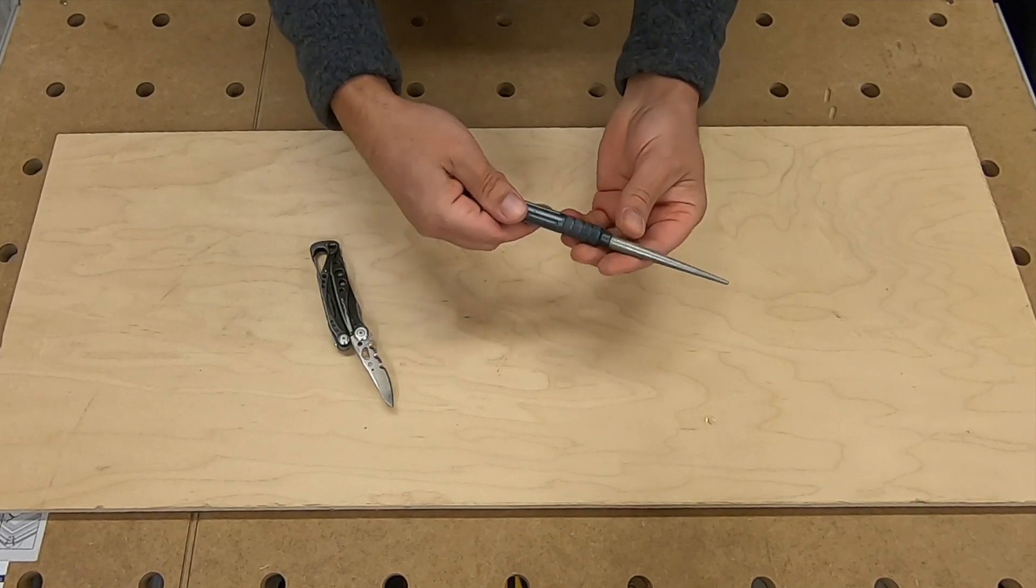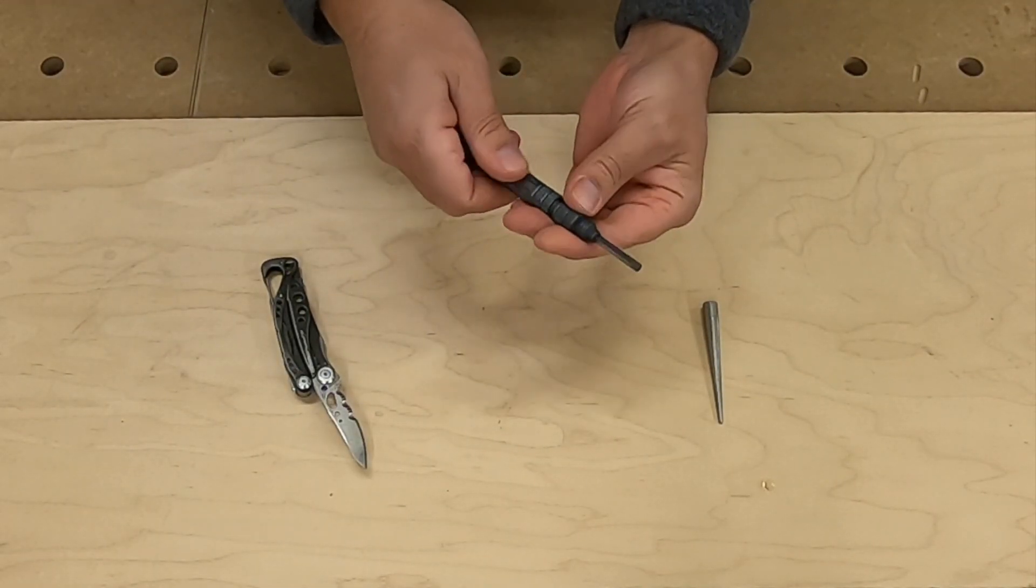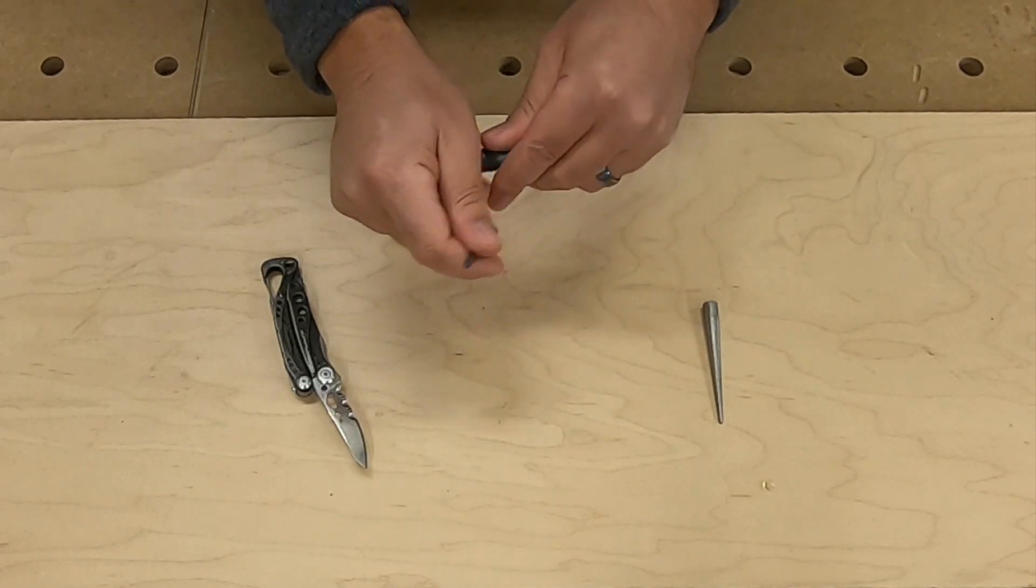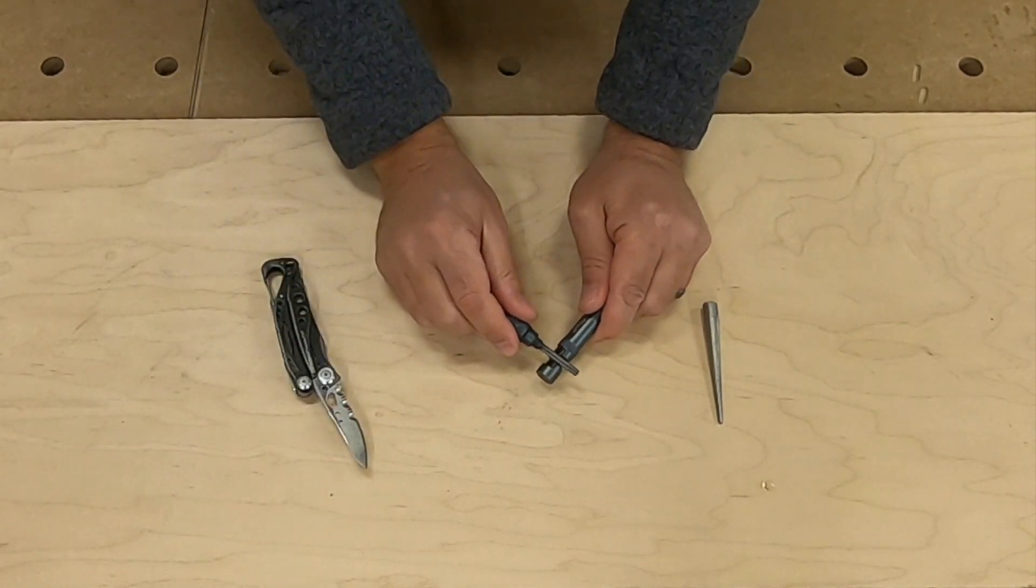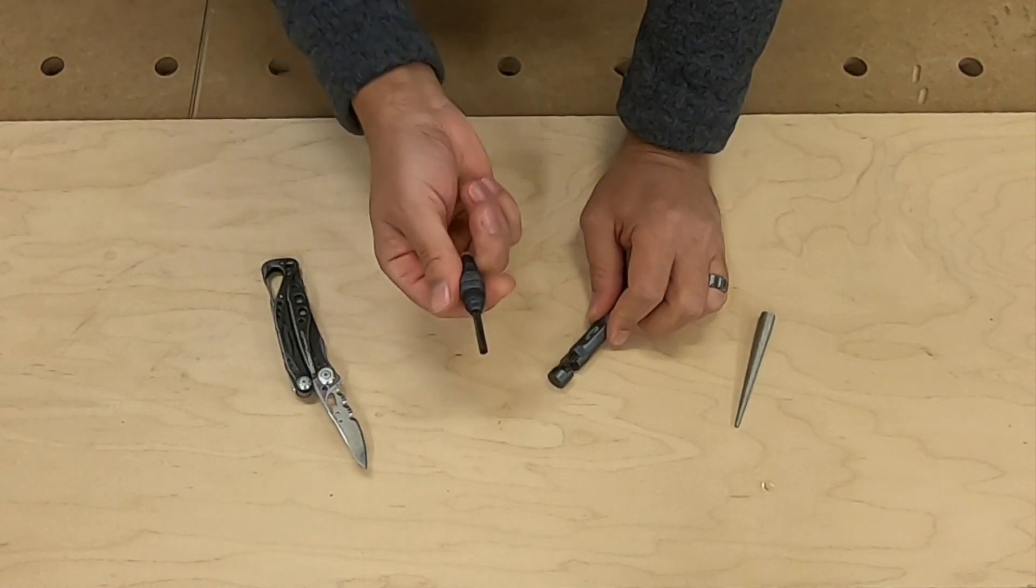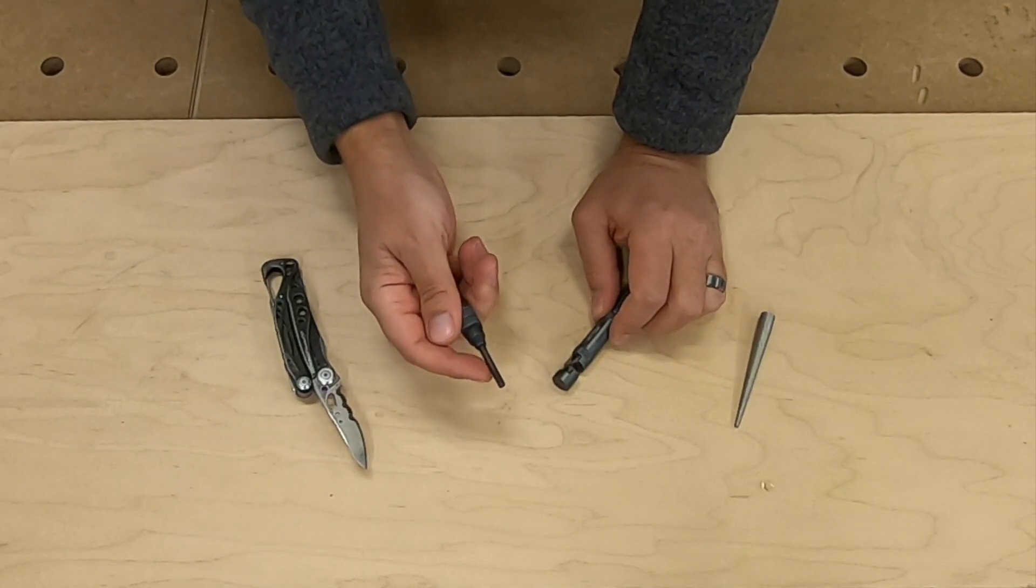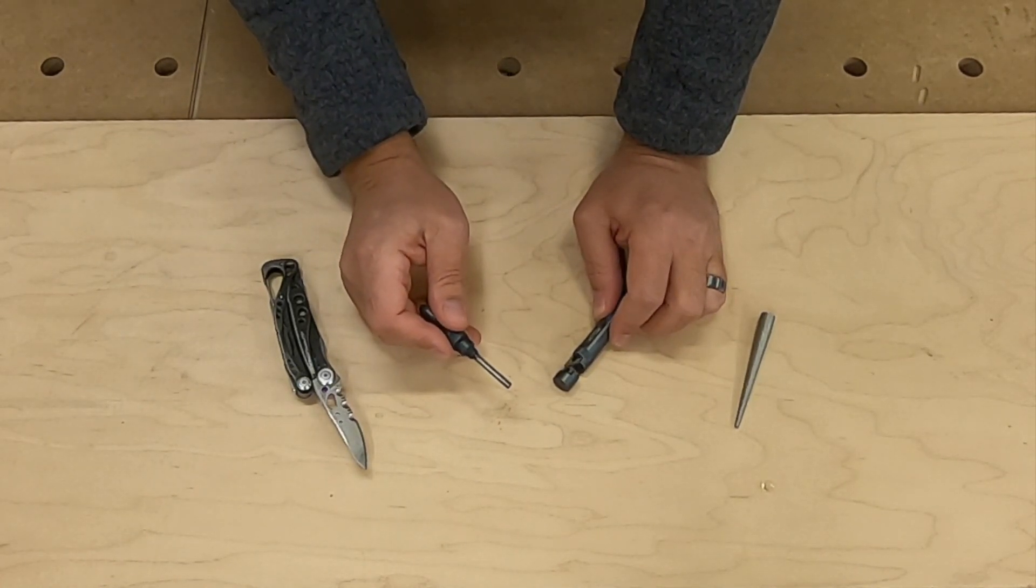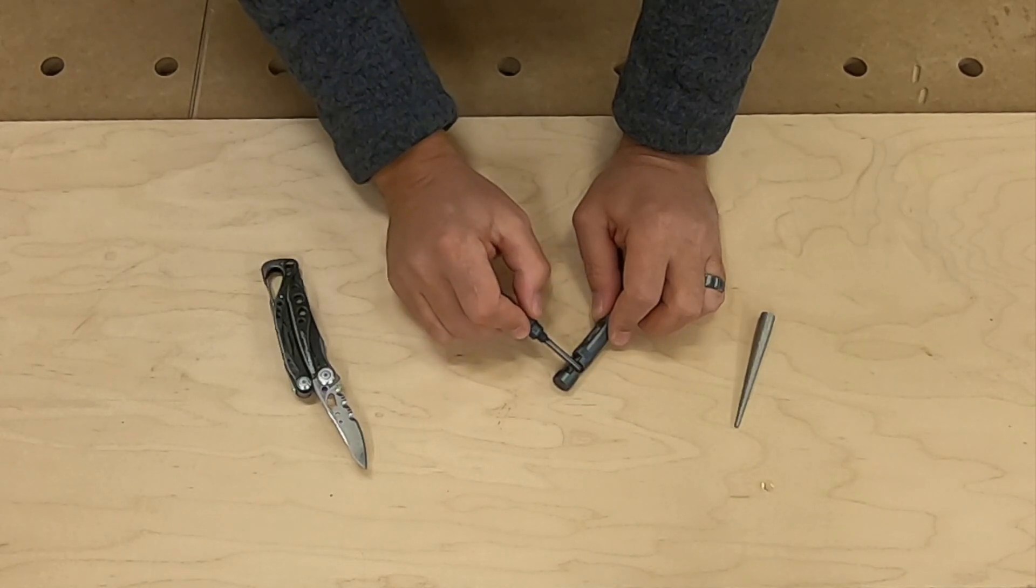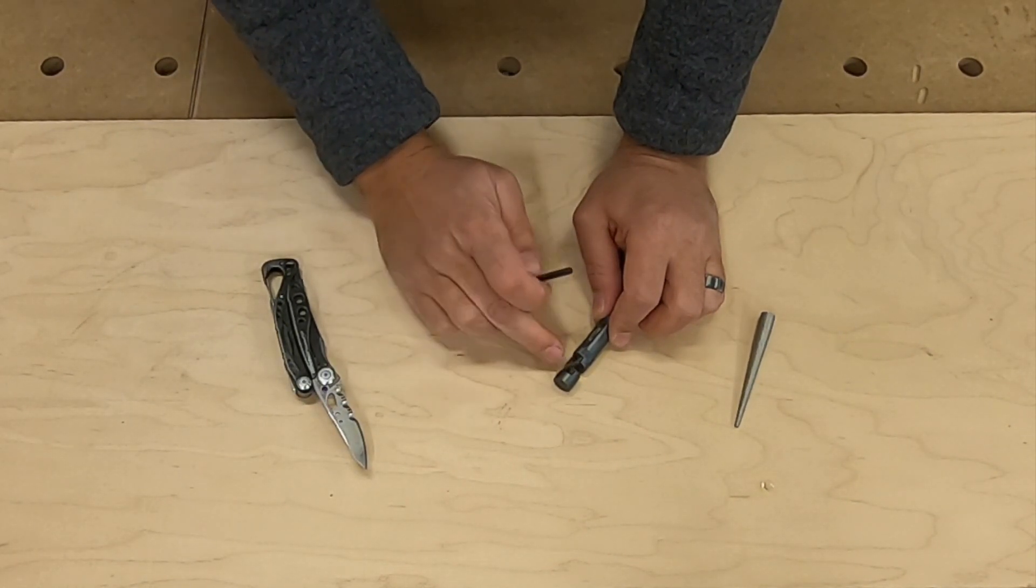Now, for the fire starter portion, you can use it in a couple different ways. Number one, you can strike it against here, which I don't really like to do. Now, I haven't really used this. I've just tried it. I haven't actually used this in the field. But, you know, if you start striking it against your blade sharpener, you're going to dull this.